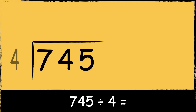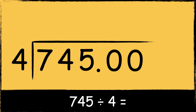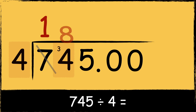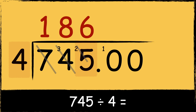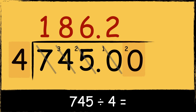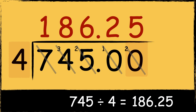Here's the last example: 745 divided by 4. Remember we need to place a decimal point and some zeros after the divisor. Four goes into seven once with three left over. Four goes into 34 eight times with two left over. Four goes into 25 six times with one left over. As we're now working after the decimal point, we also need a decimal point in the answer. Four goes into 10 twice with two left over, and finally four goes into 20 five times. So the answer is 186.25.